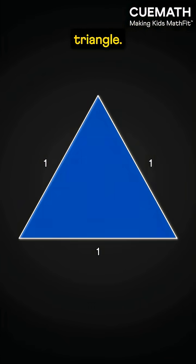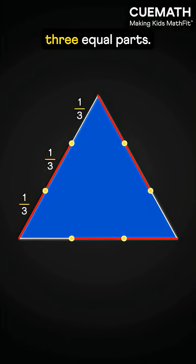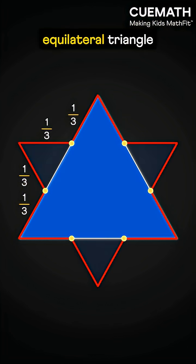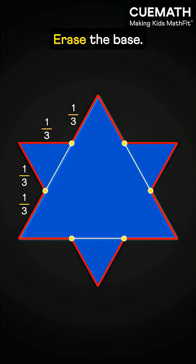Start with an equilateral triangle. Divide each side into three equal parts. On the middle part, draw a small equilateral triangle pointing outward. Erase the base.